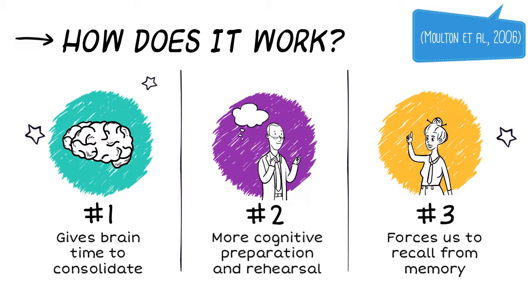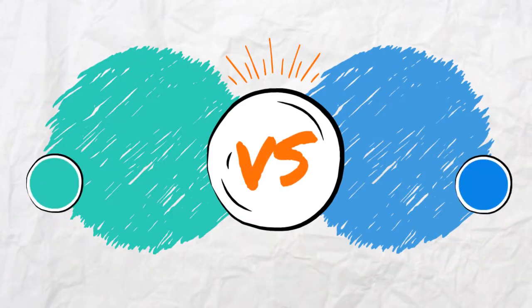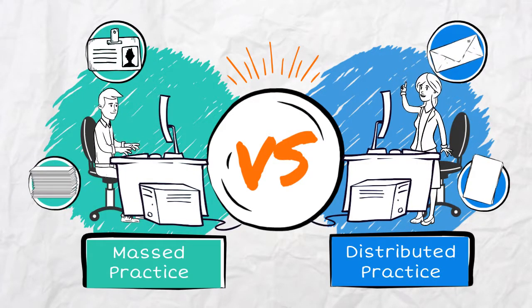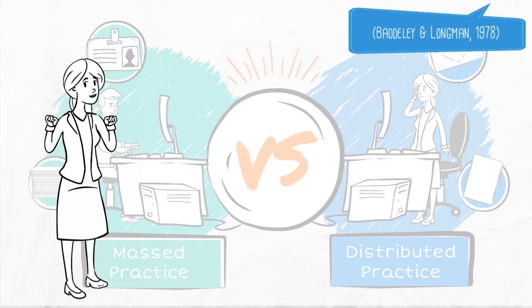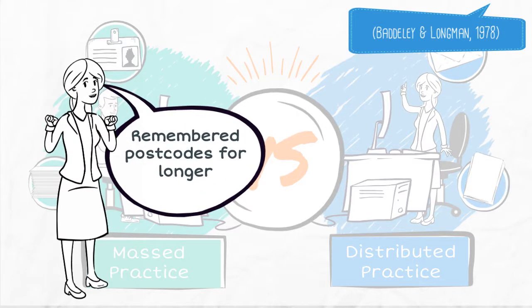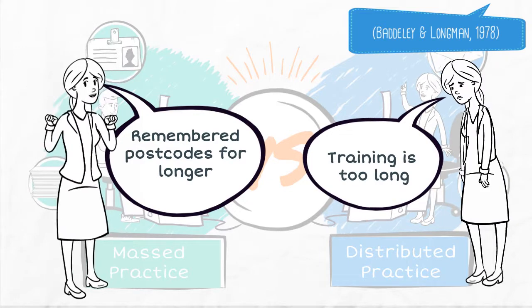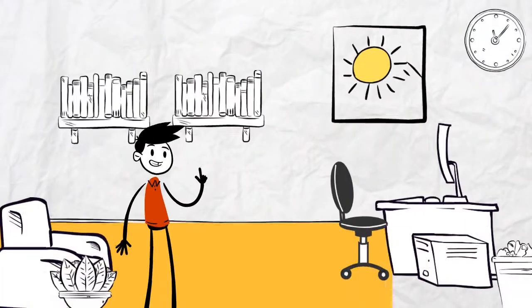One study into a new postcode system found that when postmen had distributed practice, they learned faster and they remembered the postcodes for longer in comparison to those who had massed practice. However, they also discovered that the distributed group were the least satisfied with their training because it was longer.